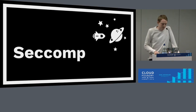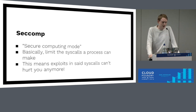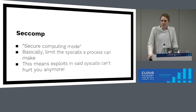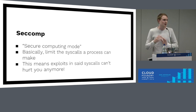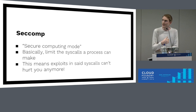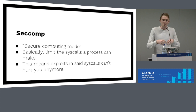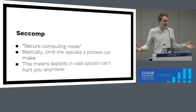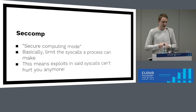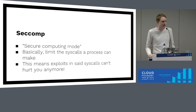Next up we have seccomp — secure computing mode. Seccomp basically allows us to limit the number of syscalls that our processes can make. All of the security here is relying on the surface area of the kernel, and the kernel is a pretty big thing. By being able to remove some of the syscalls from containerized processes, we dramatically reduce the surface area for an attack. Any vulnerabilities in those syscalls are no longer a concern because the containers don't have permission to run them anyway.